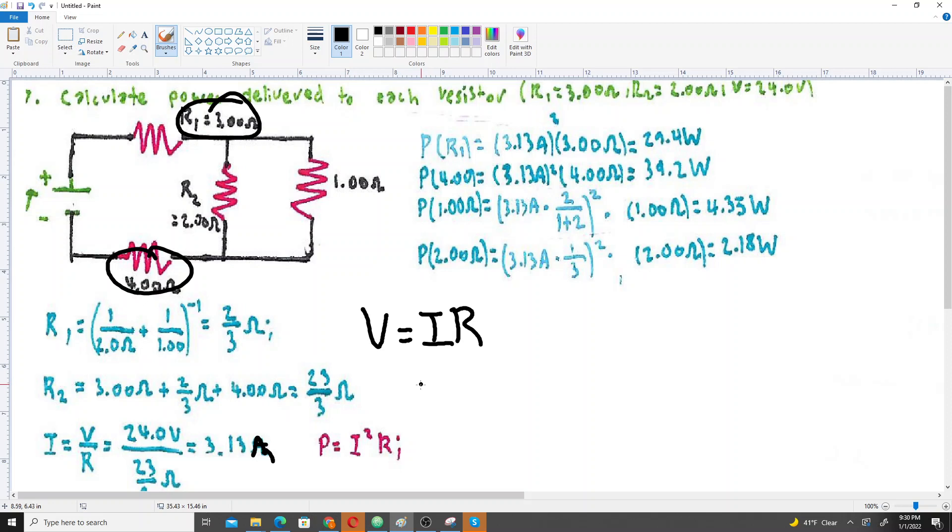Alright, next, now that we know the current, we can find the power delivered to the 3 ohm and the 4 ohm because they get the same amount of current because they're in series. The only resistors that get different amounts of current are these two because they're in parallel. They get the same voltage when they're in parallel, but they get different amounts of current because the resistances are different.